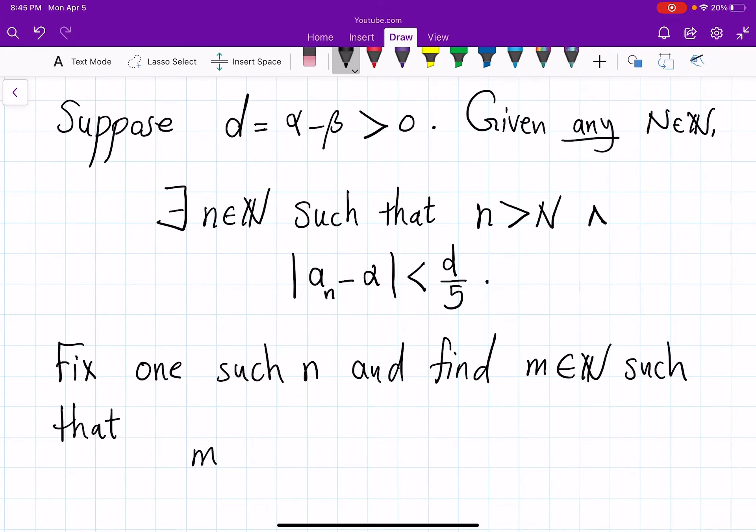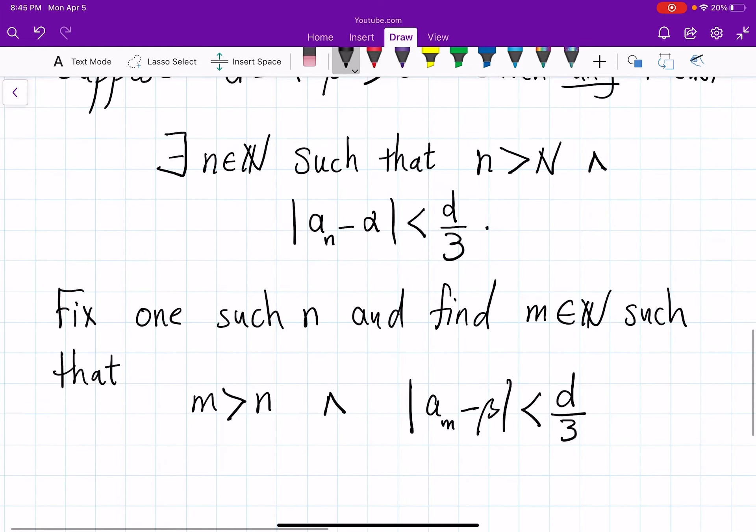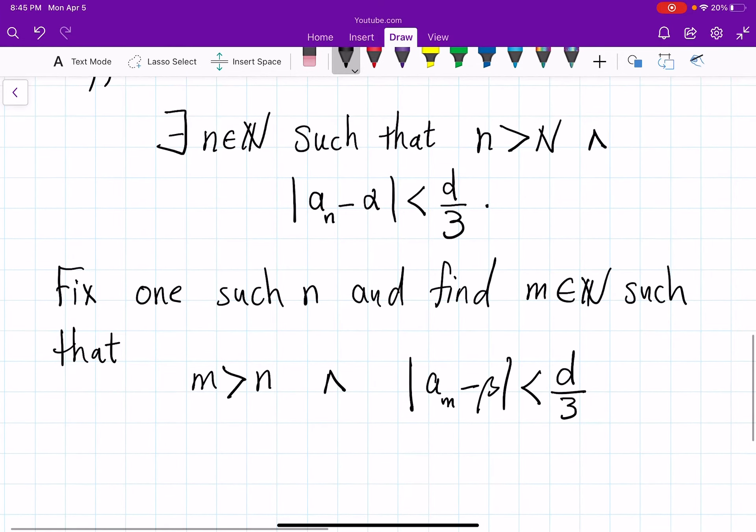m is bigger than n and |aₘ - β| is less than d over 3. So actually it would work with 5 as well, but 3 is probably close to being optimal. So let me do d/3 in both.